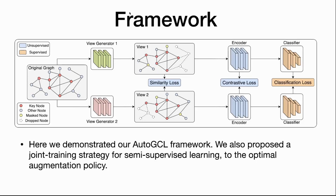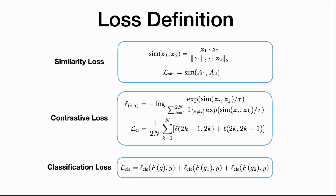We define a similarity loss to make sure the generated views are not too similar. These contrastive samples are passed to graph encoders to calculate the contrastive loss. For semi-supervised learning, we also have a classifier to calculate the classification loss on the labeled portion of the data. Note that our classification loss is applied not only on augmented graphs but also on the original graph, because no matter how well you train your view generators, hand-labeled data is always better.